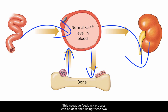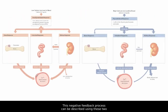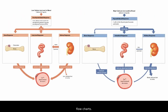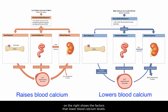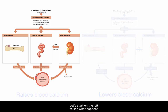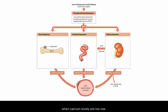This negative feedback process can be described using these two flowcharts. The flowchart on the left shows the factors that raise blood calcium levels, and the one on the right shows the factors that lower blood calcium levels. Let's start on the left to see what happens when calcium levels are too low.